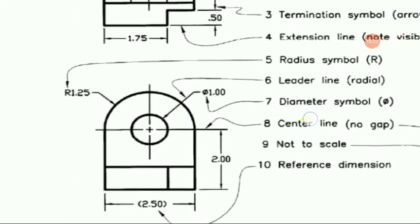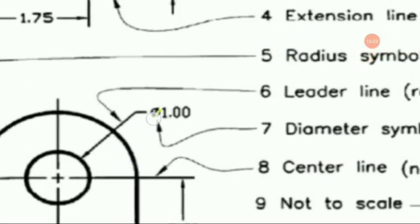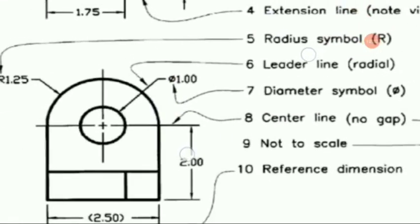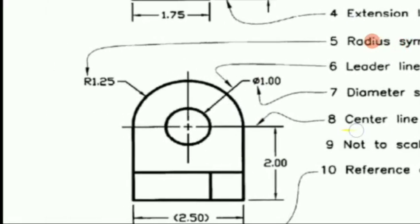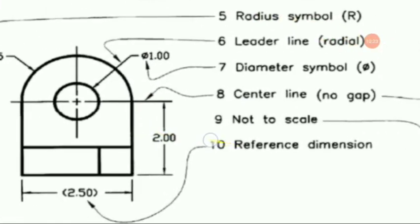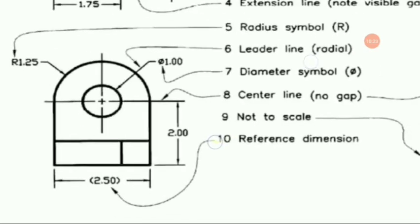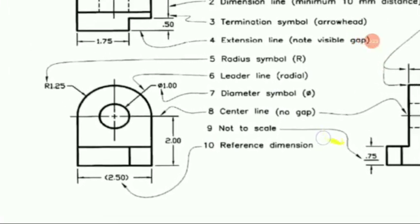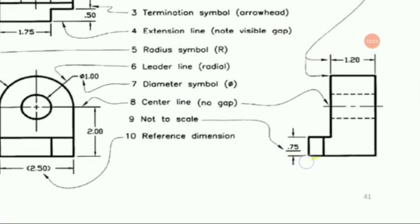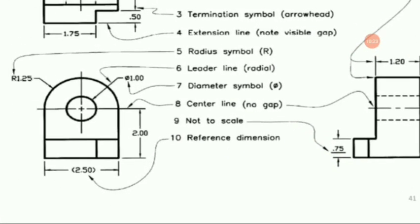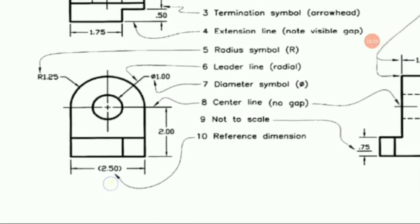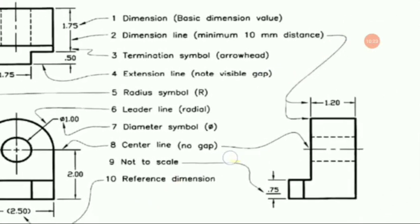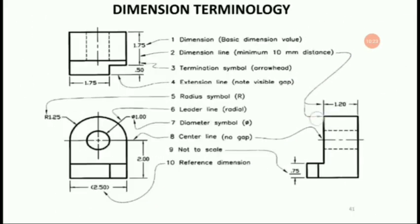The diameter symbol is phi. The center line has no gap. 'Not to scale' is also a noted term. The reference dimension is shown — for example 2.5 is the reference dimension.